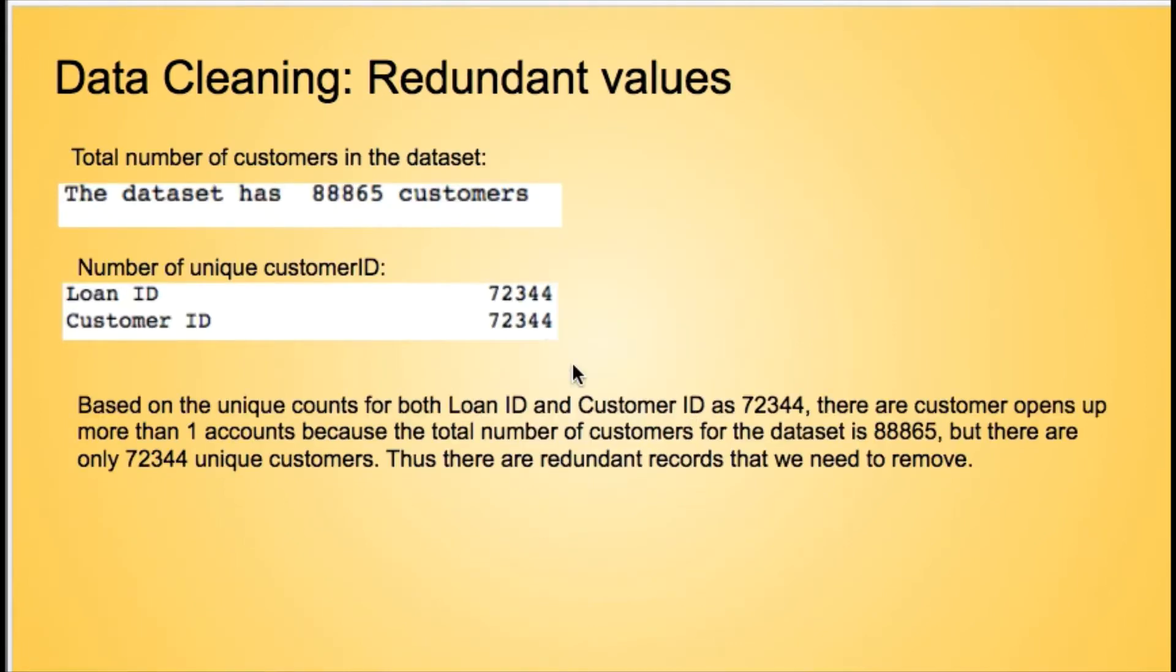Then for the data cleaning, we found some redundant features because from our original data frame, there are 88,865 customers, but the number of unique customer IDs is only 72,344. After we took a look at the data frame, we decided to drop all those duplicate values.